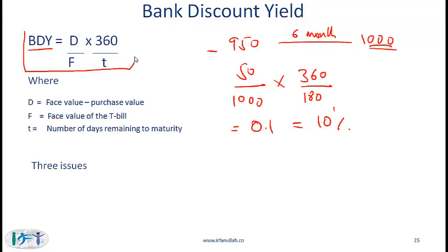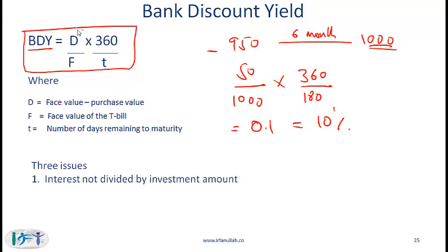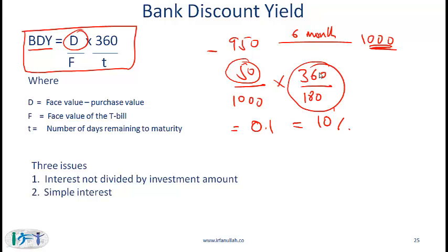If you look at this formula carefully, you should be able to detect three issues. First, the interest amount — the discount of $50 — is divided by the face value of $1,000 rather than the investment amount of $950. Normally when calculating a yield we divide by the investment amount. Second, we are using simple interest — we simply multiply by 2 (360 over 180) to annualize rather than compounding. Third, we are using a 360-day year rather than a 365-day year.